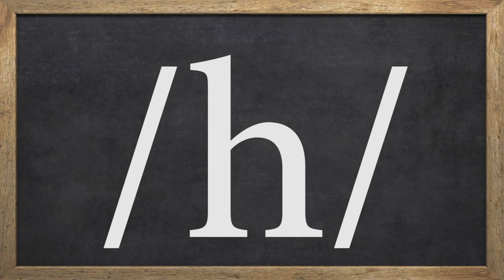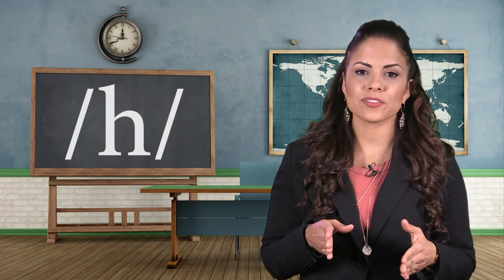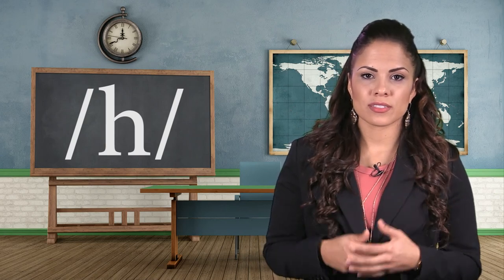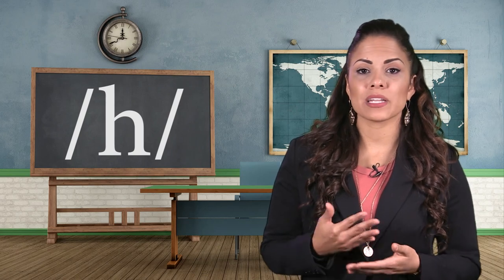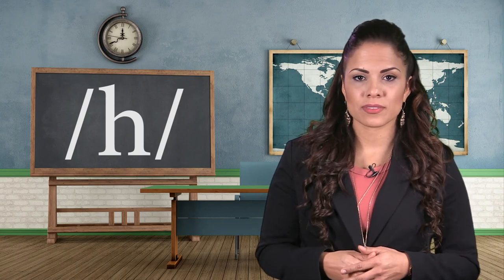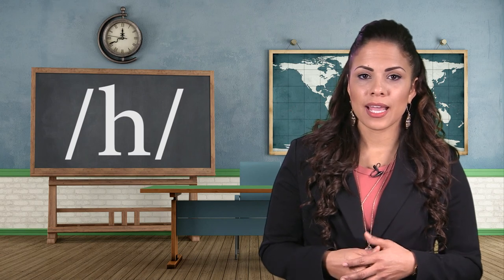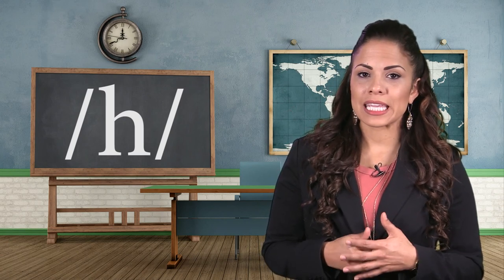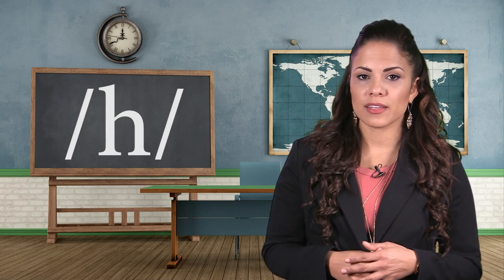The last consonant sound we will discuss takes place in the throat, in the glottis area. To produce /h/, you simply open your mouth and let air pass through your glottis. This sound is special because it does not happen at the end of any word in English. For example: he, hero, hot, ahead, and behind.